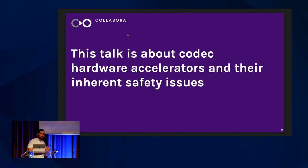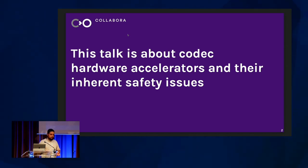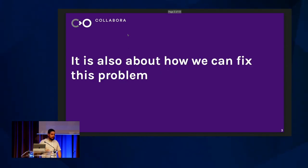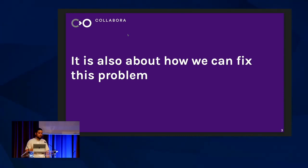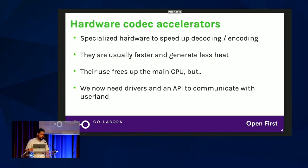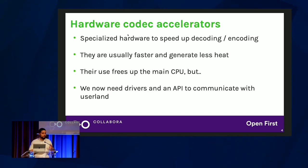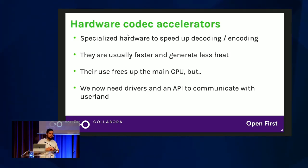I want to be clear to you all about one thing. This talk is about hardware accelerators for codecs and about their safety issues, and basically how we can attempt to solve this problem using Rust in the Video for Linux subsystem. I want to begin by telling you what a codec accelerator is — it's a specialized hardware unit that we use to basically accelerate how fast you can do video encoding and decoding.